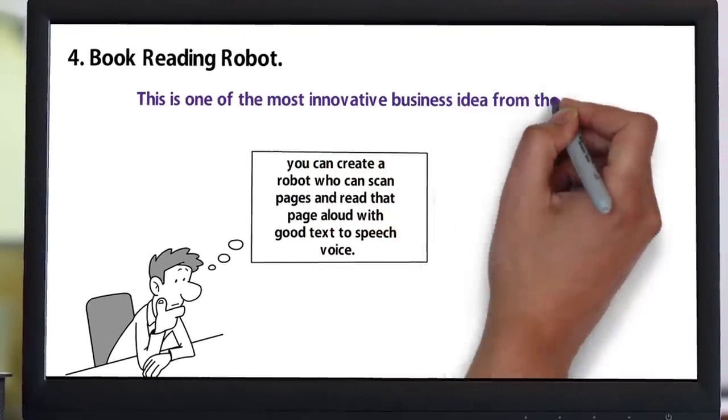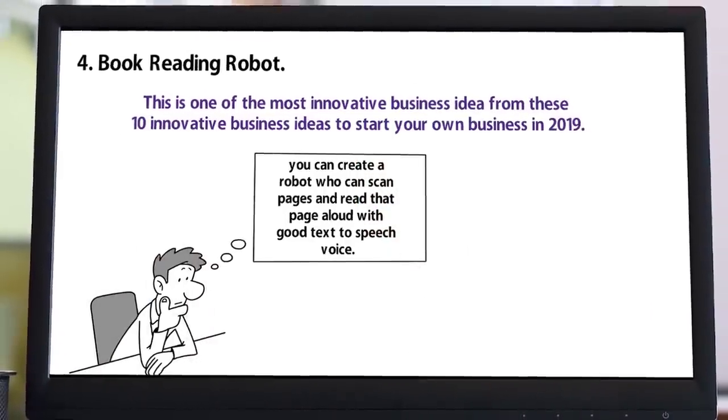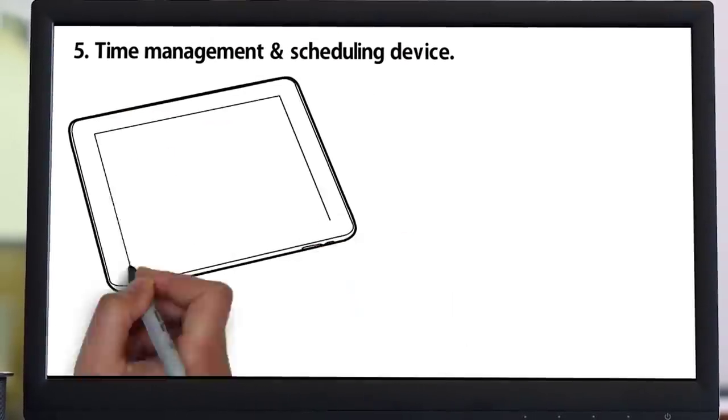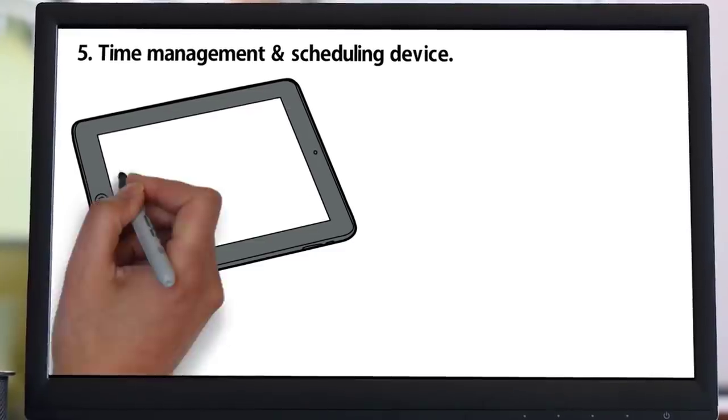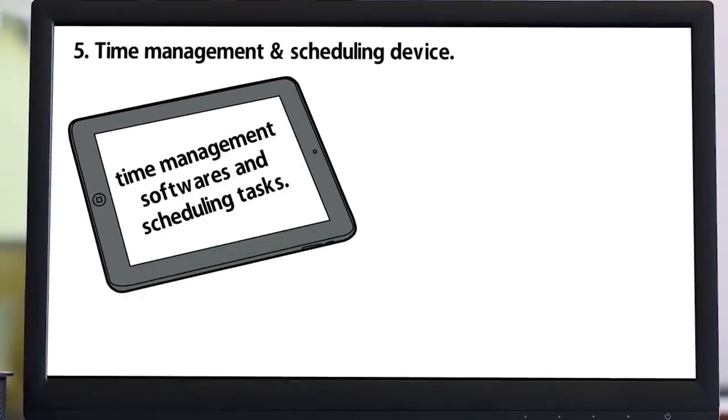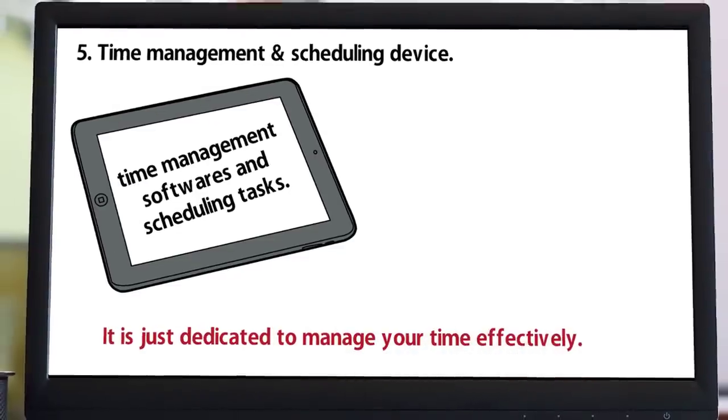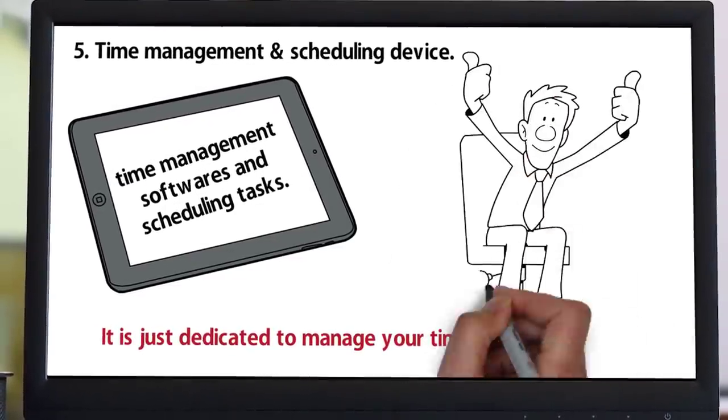Number five: Time management and scheduling device. You have to make one electronic LED screen device in which you program all time management software and scheduling tasks. It is dedicated to manage your time effectively. This device can be used in office or workspace. Every smart entrepreneur would love to buy this device.